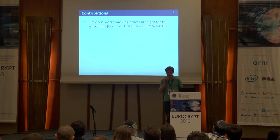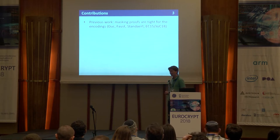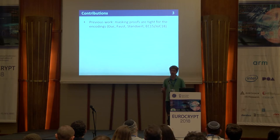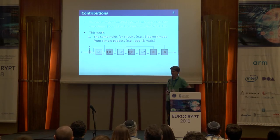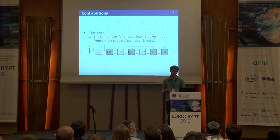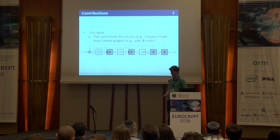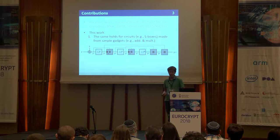In previous work we showed that masking proofs are reasonably tight for just the encoding — we can always mount attacks that exploit essentially all the information in the leakages. What we want to do in this work is look at what happens for more complex circuits, which is more relevant to practice. For example, we look at the AES S-box made of simple gadgets like additions and multiplications.